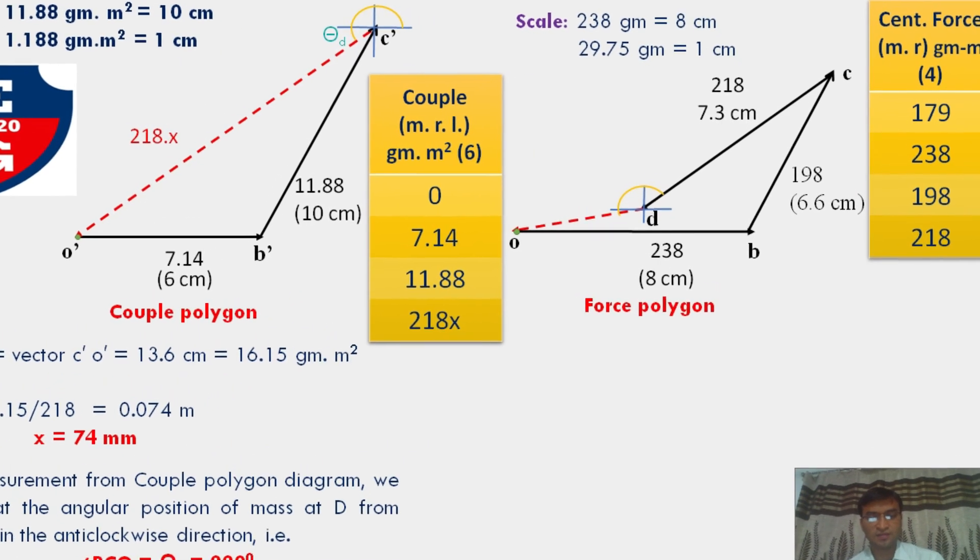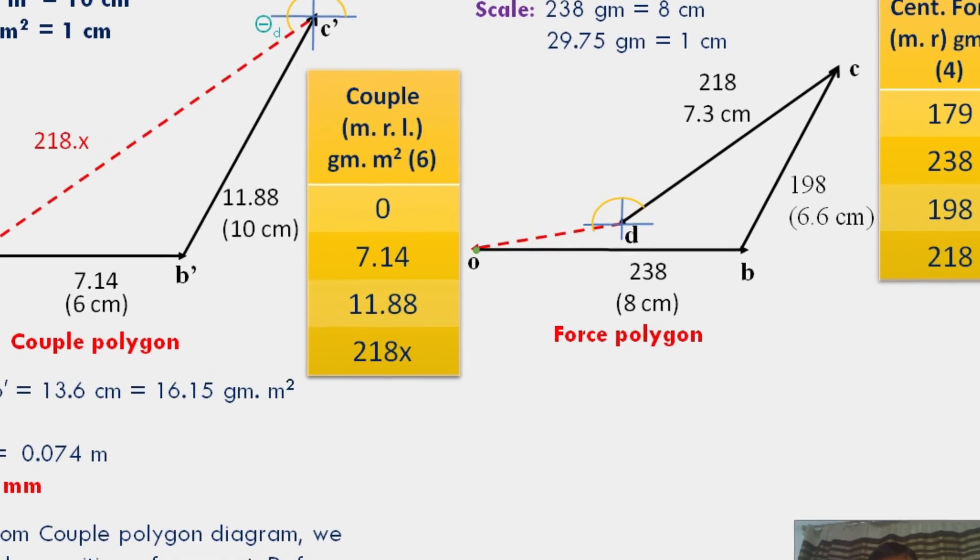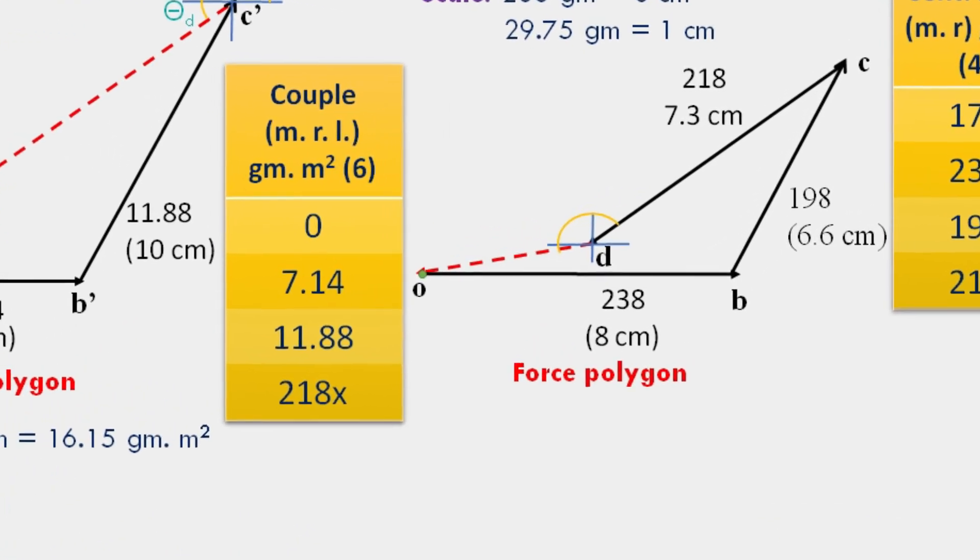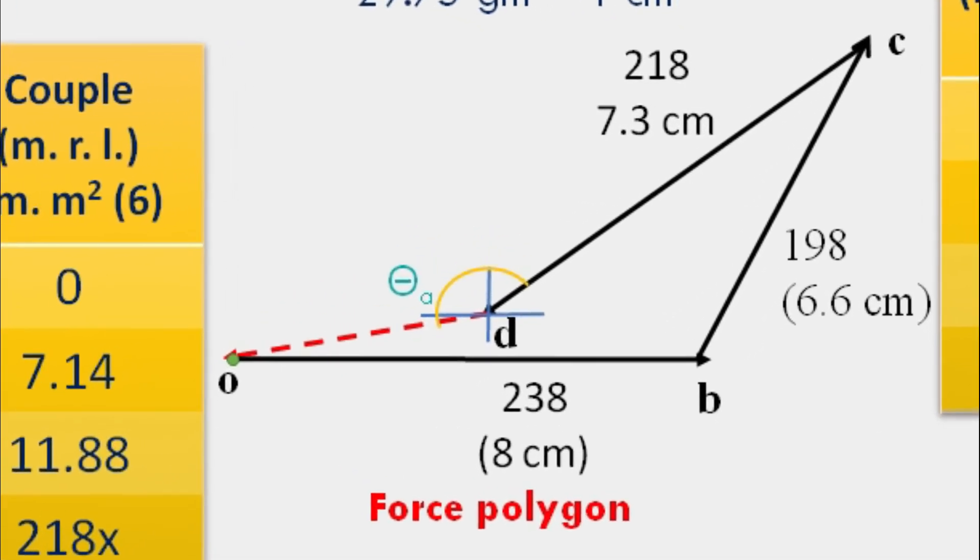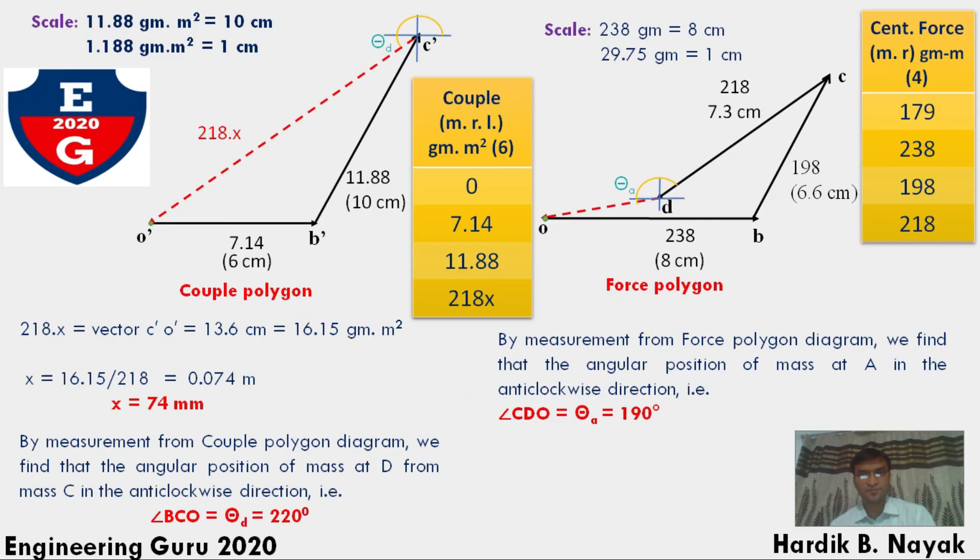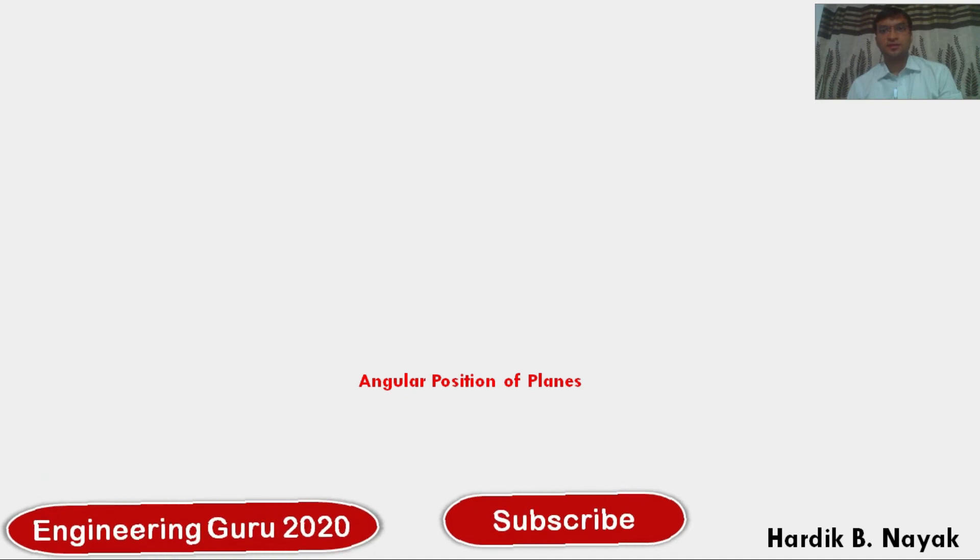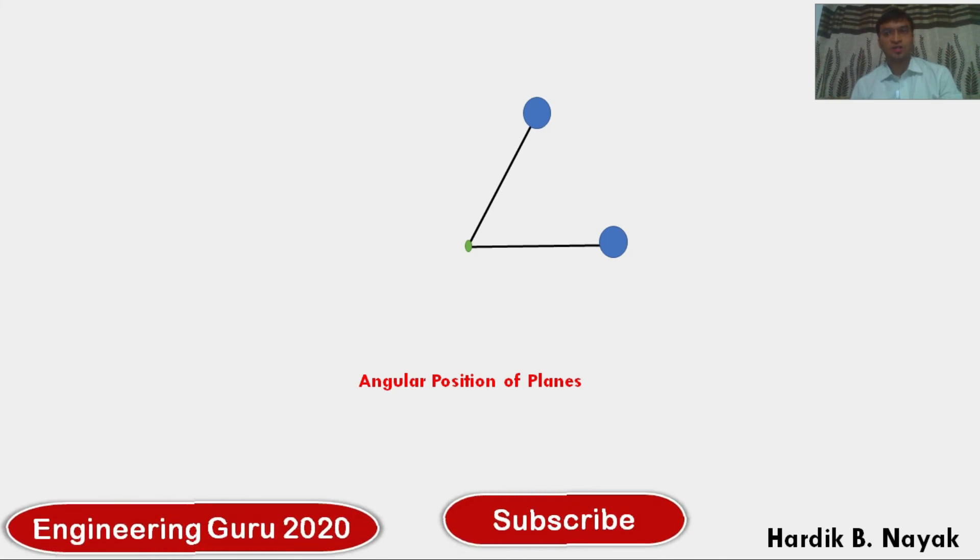By using protractor, measure from force polygon diagram. We find the angular position of mass A from anti-clockwise direction. That is angle CDO equals 190 degrees. Now put value of theta A and theta D in position of planes diagram. In final step, you can see C and D is 60 degrees. We get the value of theta A, that is 190 degrees, and theta D is 220 degrees. This is the final answer of our problem.